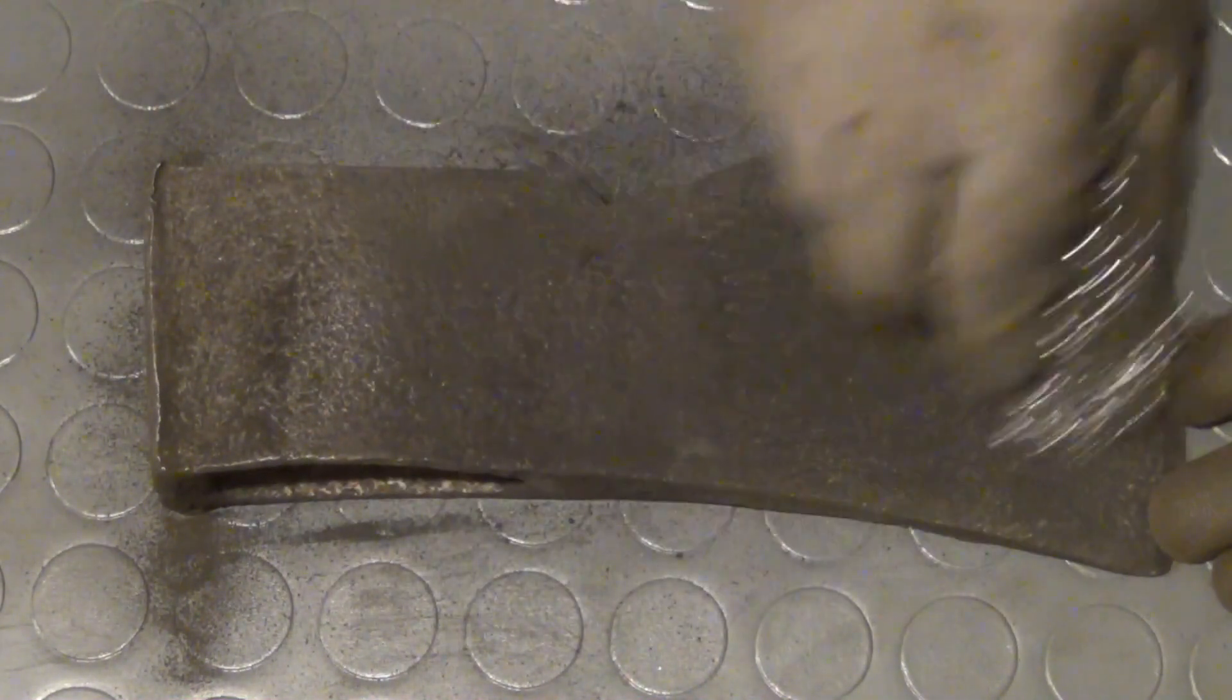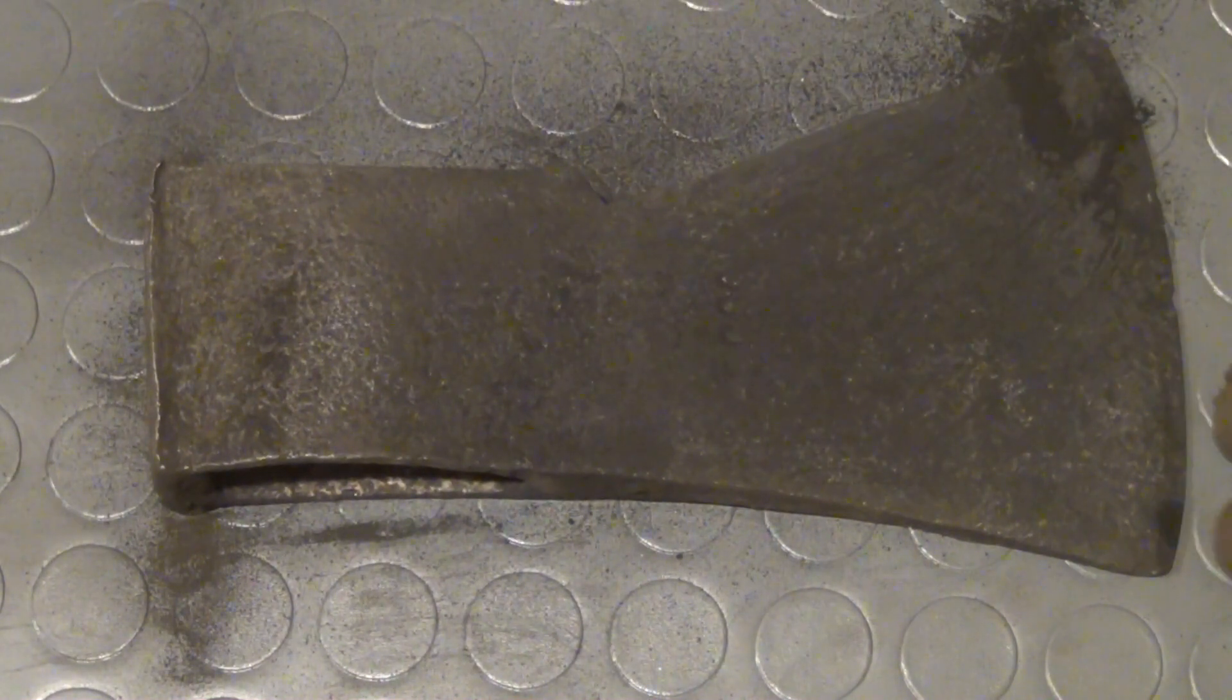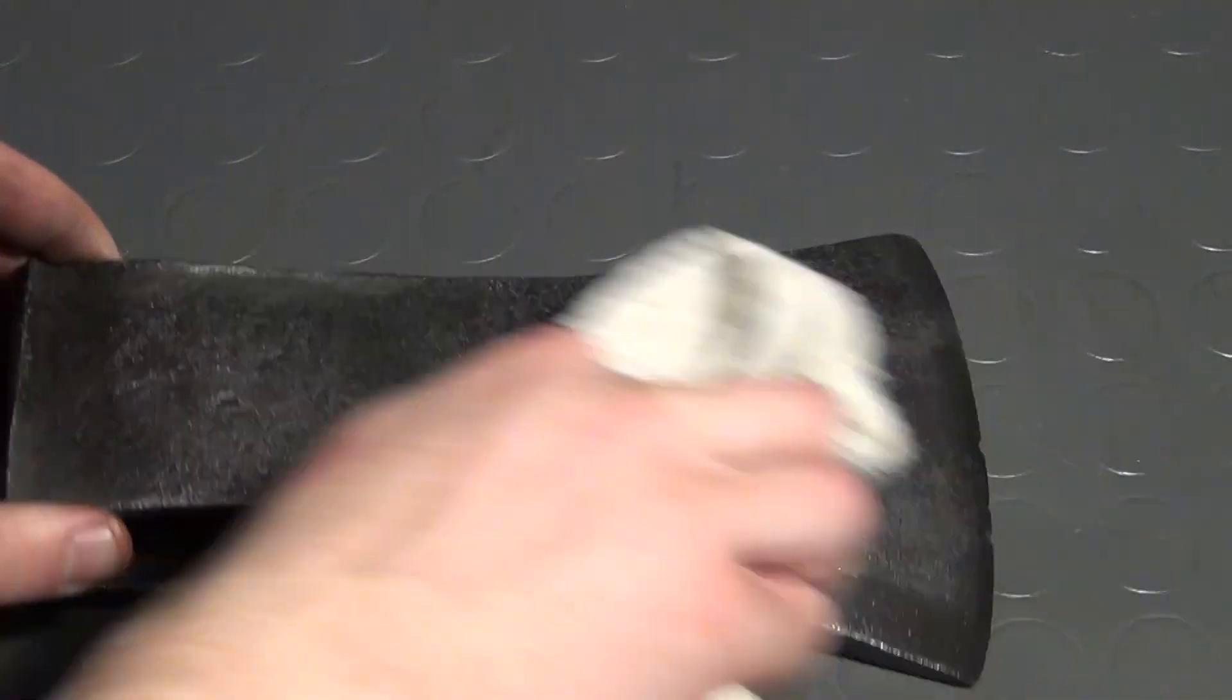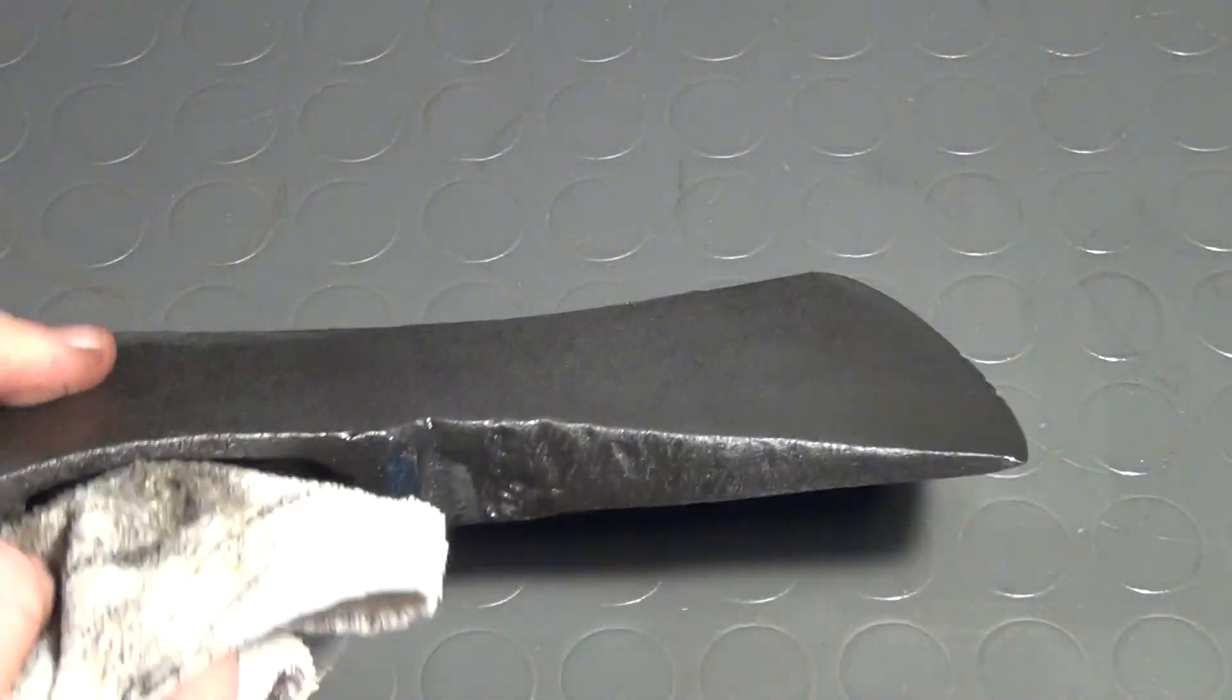And after that I took out the axe head, I cleaned it off with some steel wool, dried it with a piece of cotton and then I oiled it with some ballast sole and that is what it now looks like.